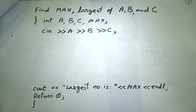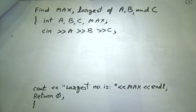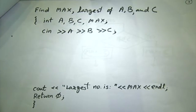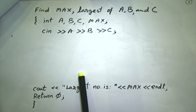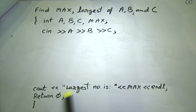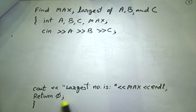Now here is a problem I would like you to solve: find the maximum, the largest of three numbers a, b, and c. The declaration is given: int a, b, c, max. I have taken plain input a, b, and c. At the end of this program I expect your program would have found out the right value of max. Putting c-out, largest number is max, and return 0.